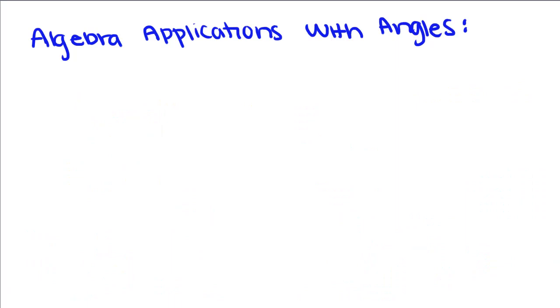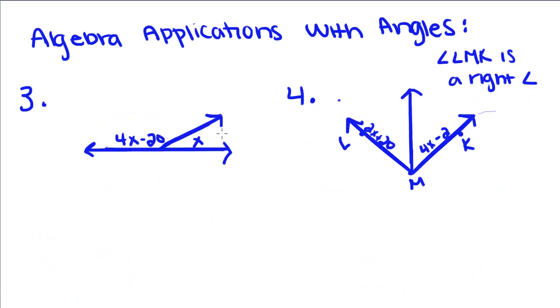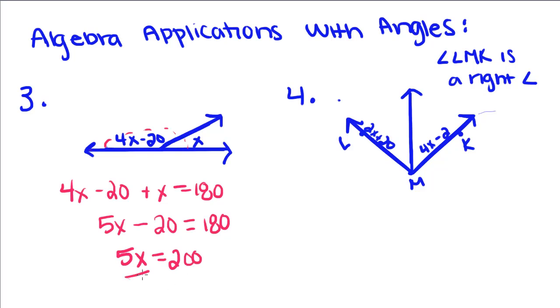We have a couple more examples we're going to do. We have this. These two angles right here. They both form a line. So, that means that these two angles are supplementary, which means that their sum is equal to 180 degrees. 4x minus 20 plus x is equal to 180 degrees. 4x plus x is 5x minus 20 is equal to 180 degrees. If you add 20 to both sides, you get 5x is equal to 200 degrees. We're going to divide both sides by 5. We get x is equal to 40 degrees.